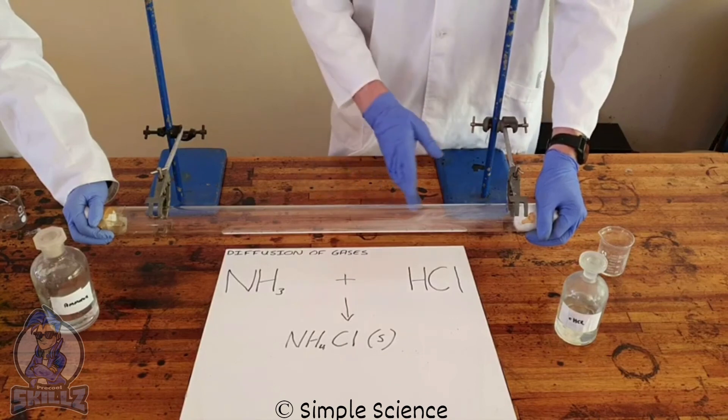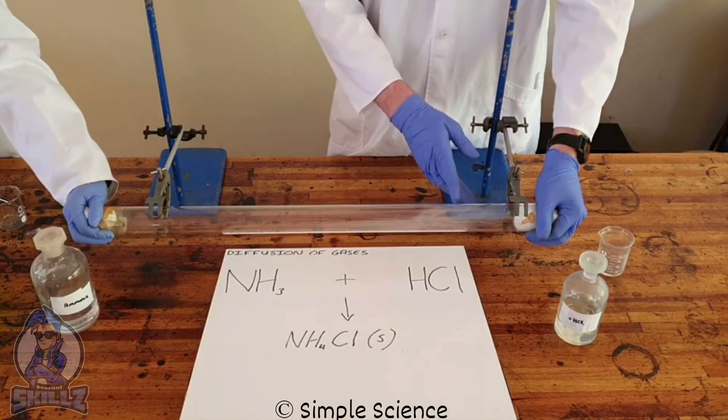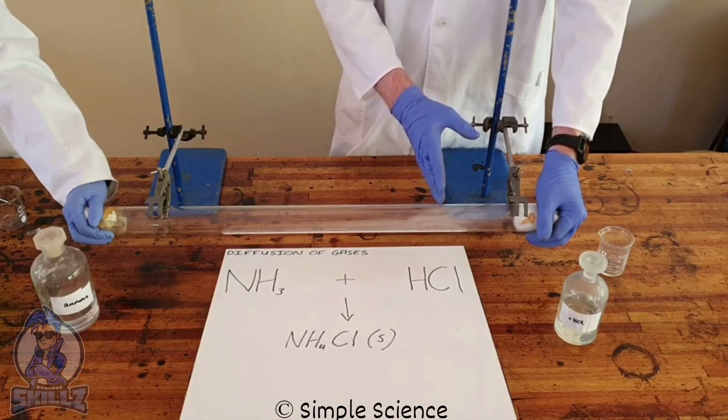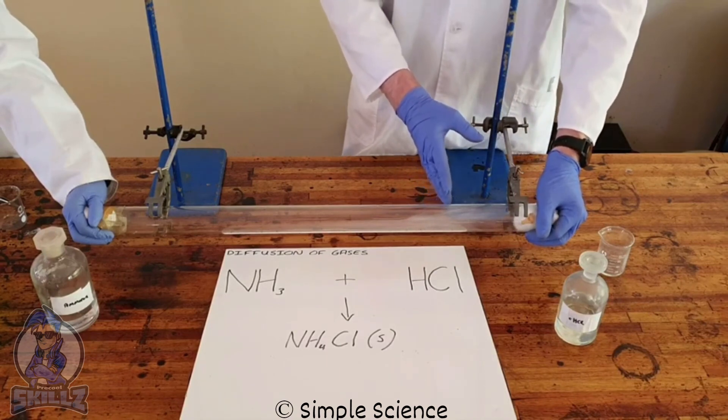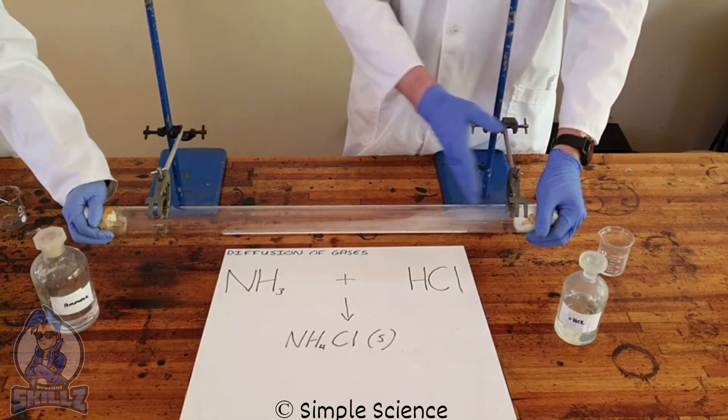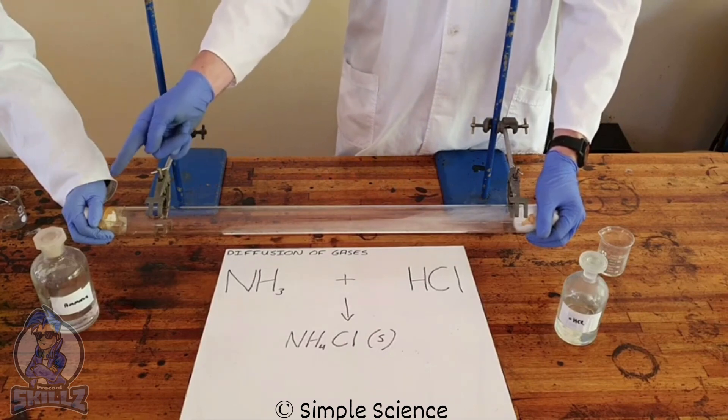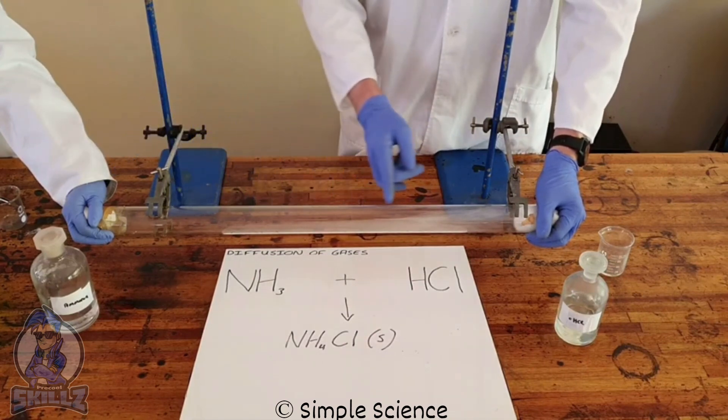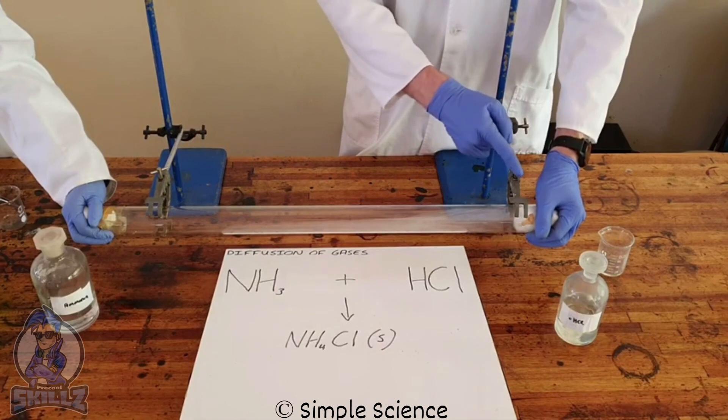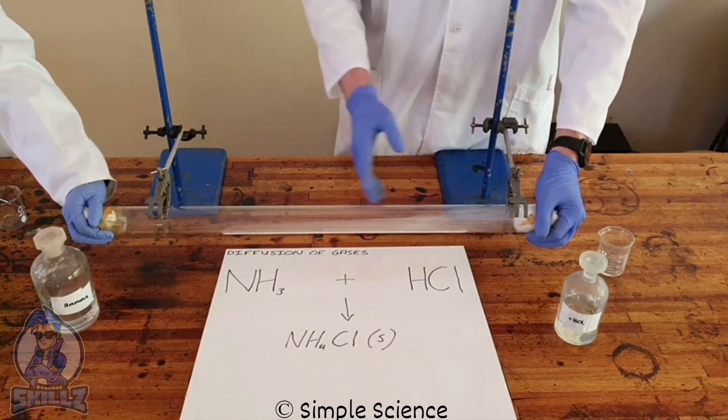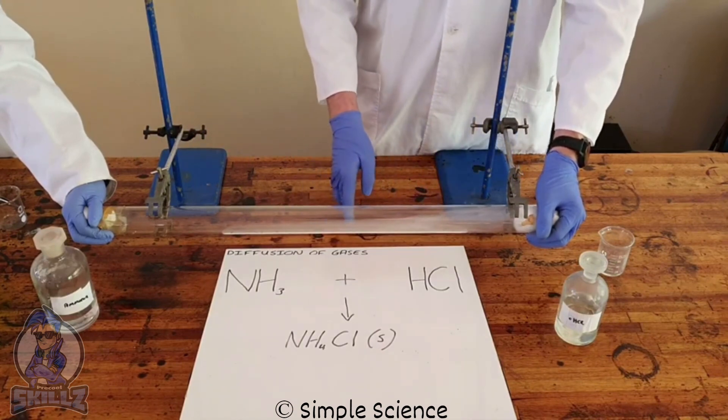And here we can start to see a white cloud that is forming. And what this shows us and what this demonstrates is very clearly that these gases have been able to move through the air that is inside this tube. And also it has shown us that the ammonia gas has traveled a far greater distance than the hydrochloric acid gas, which tells us that not only do gases move, but gases move at different speeds.